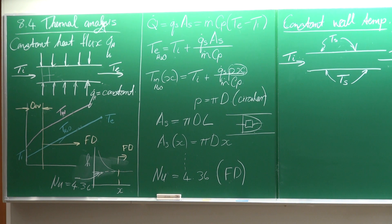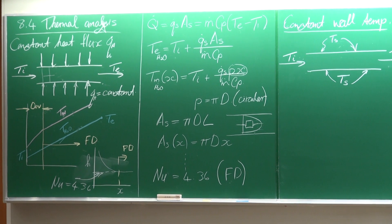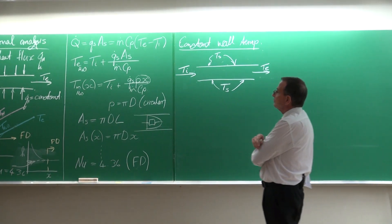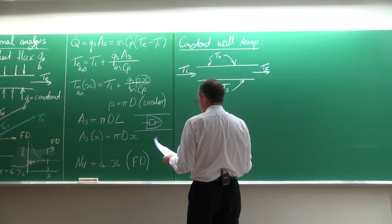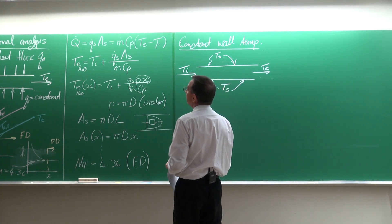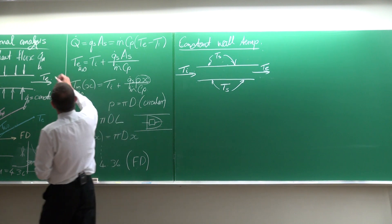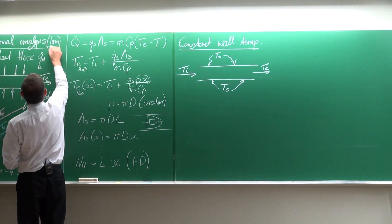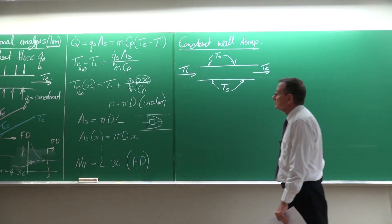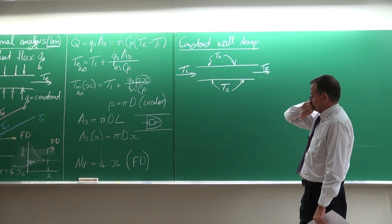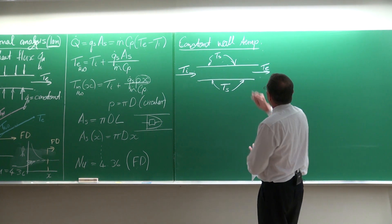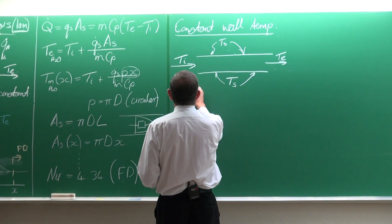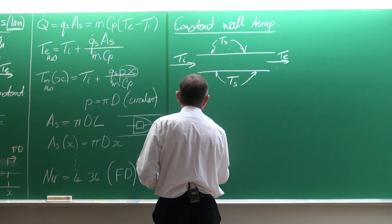Any questions on this part for constant heat flux condition? It is also good to add here: this is for laminar flow. Now for the constant wall temperature case it is much different, and that is very important.